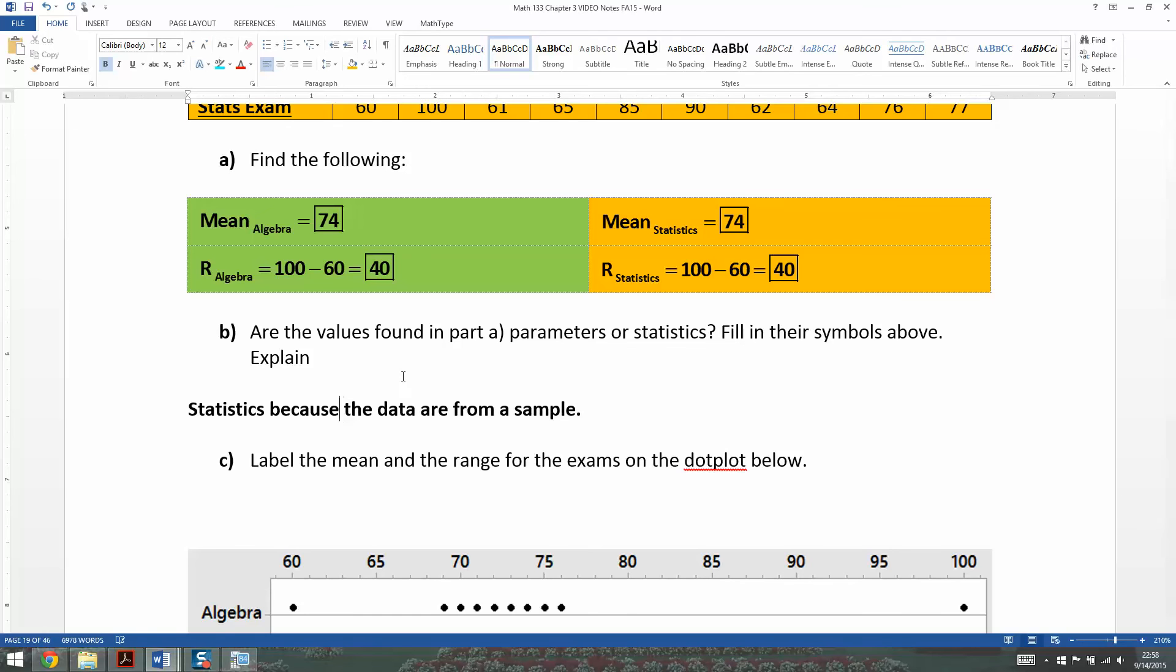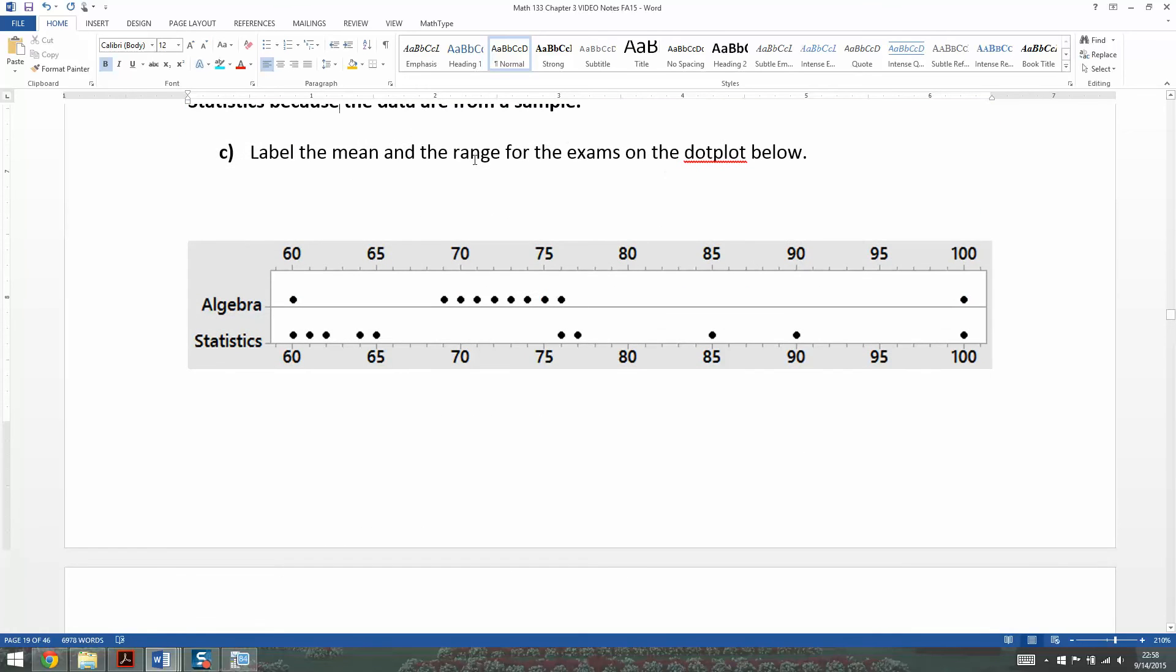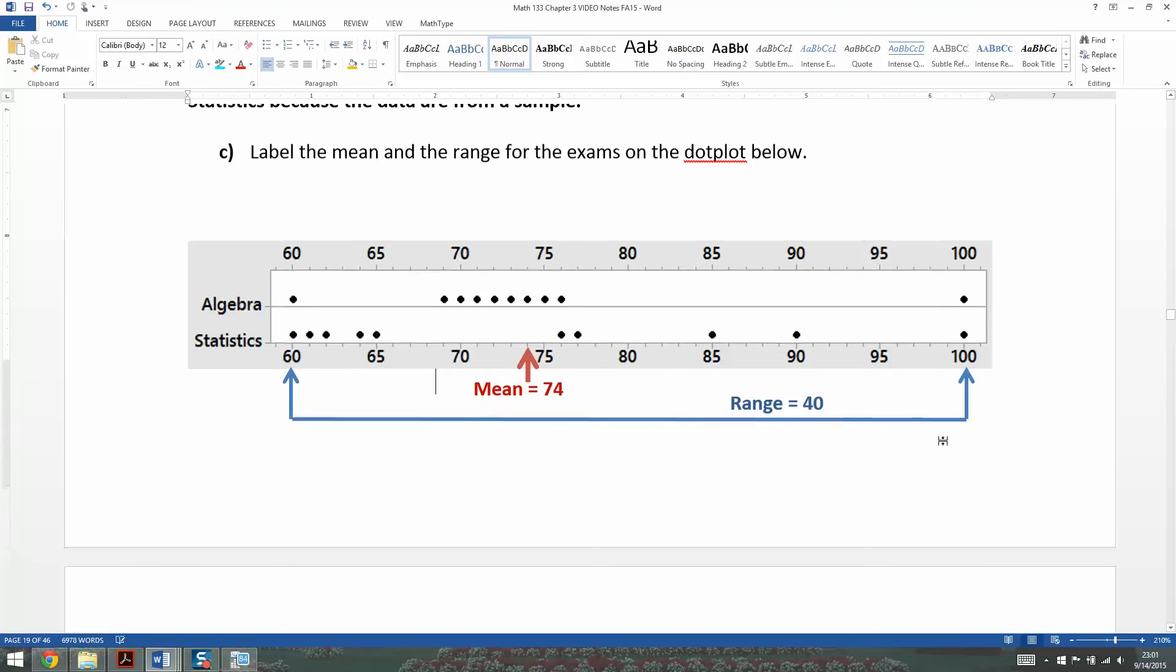Next. Label the mean and range for the exams on the dot plot below. A dot plot is something you learn about in Chapter 2. That top line is the algebra exam scores, and the bottom line is the statistics exam scores. We want to label the mean and the range. Luckily for us, they have the same mean and range. Let me type those in. The mean is right here at this spot, which is 74, and the range is the distance from 60 to 100, which was 40.